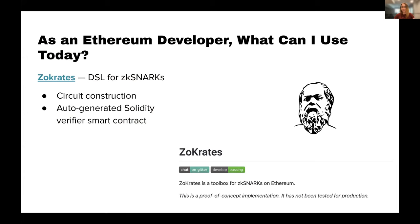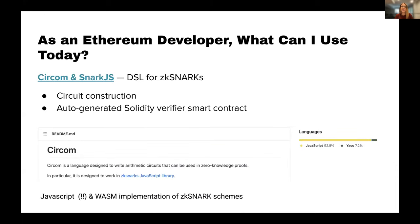For Ethereum developers trying to figure out what to use today: ZoKrates is probably one of the earlier projects for a DSL for ZK-SNARKs. It provides really good documentation and handles a lot for you — it's a pseudo-language that does certain constructions in the background and auto-generates a Solidity verifier smart contract that you can easily deploy to verify your proofs on Ethereum and create them somewhere else, like in your browser application. The one that's probably most used today is Circom and SnarkJS.